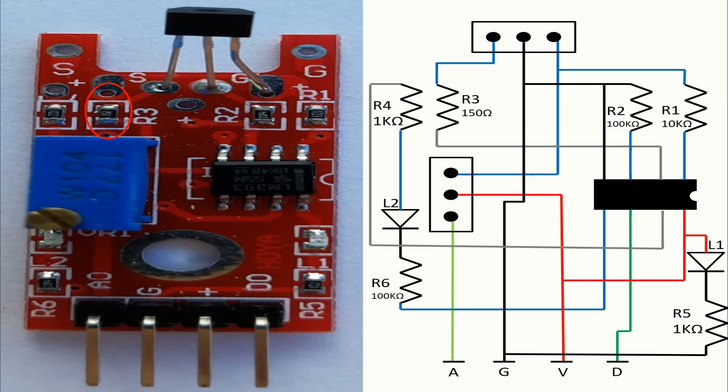On the right you can see how the pins of the module are connected on this board. We have in black the flow of the ground. We have in red the flow of the voltage. We have in light green the flow of the analog signal. And we have in green the flow of the digital signal.